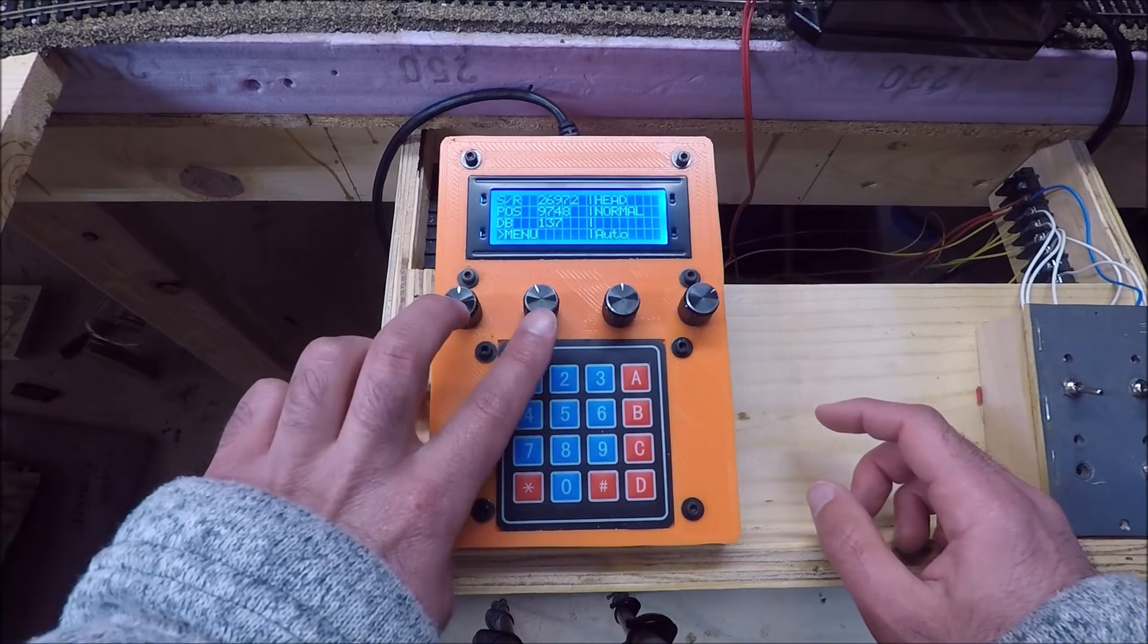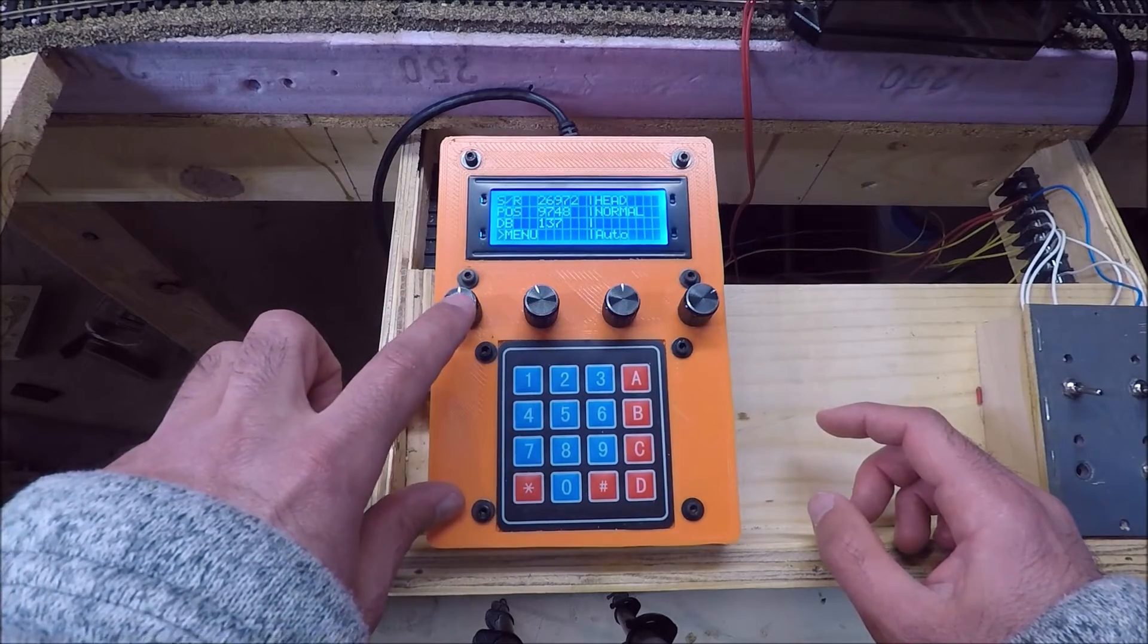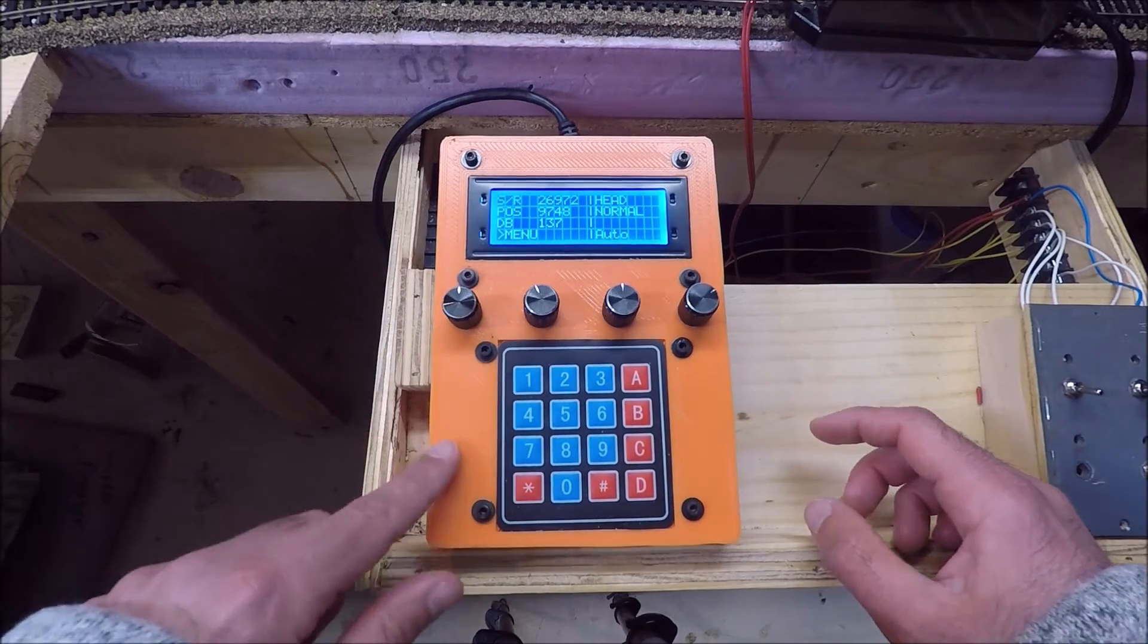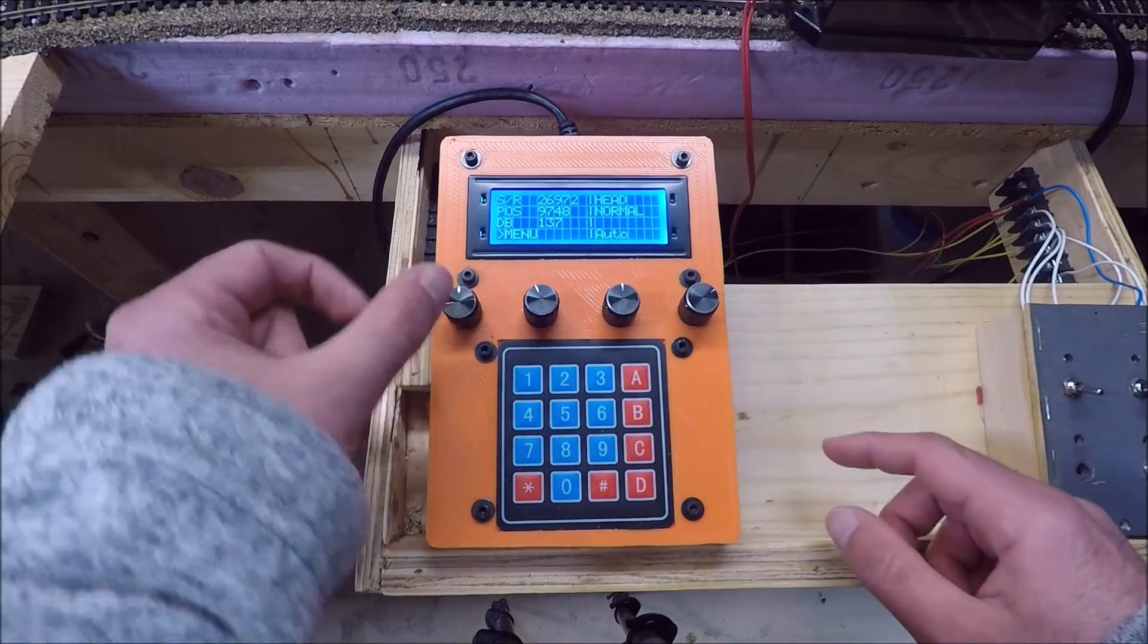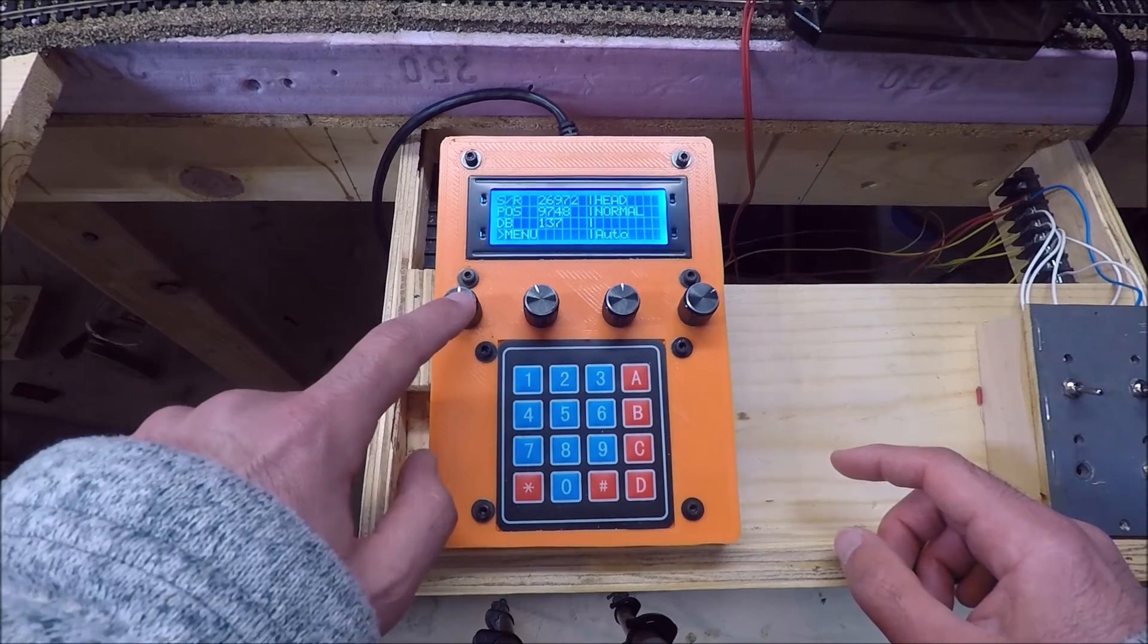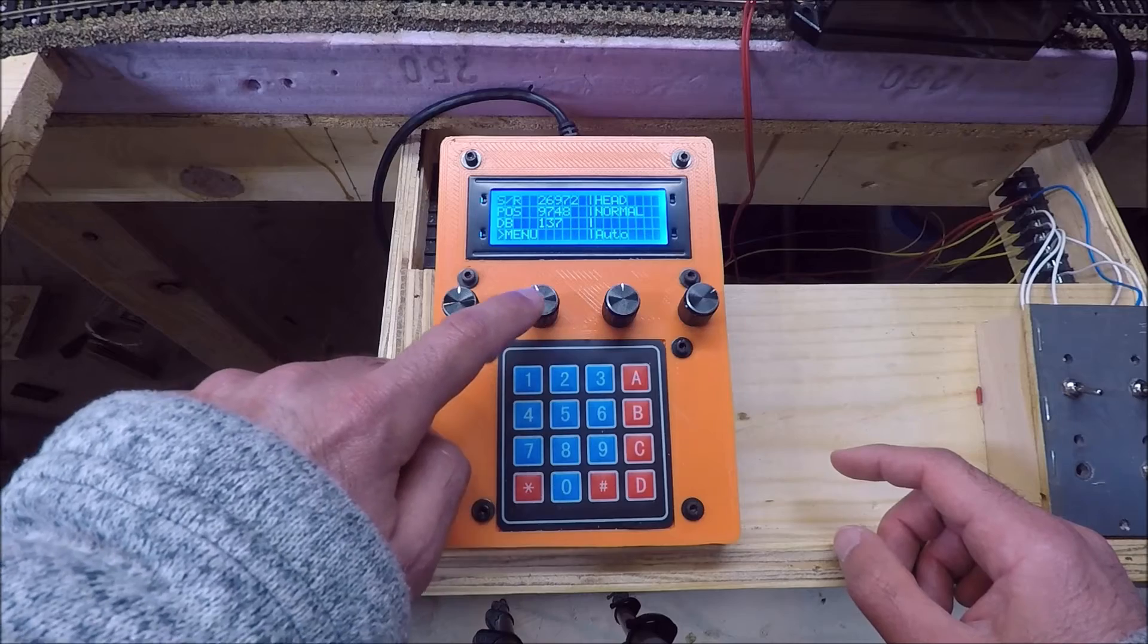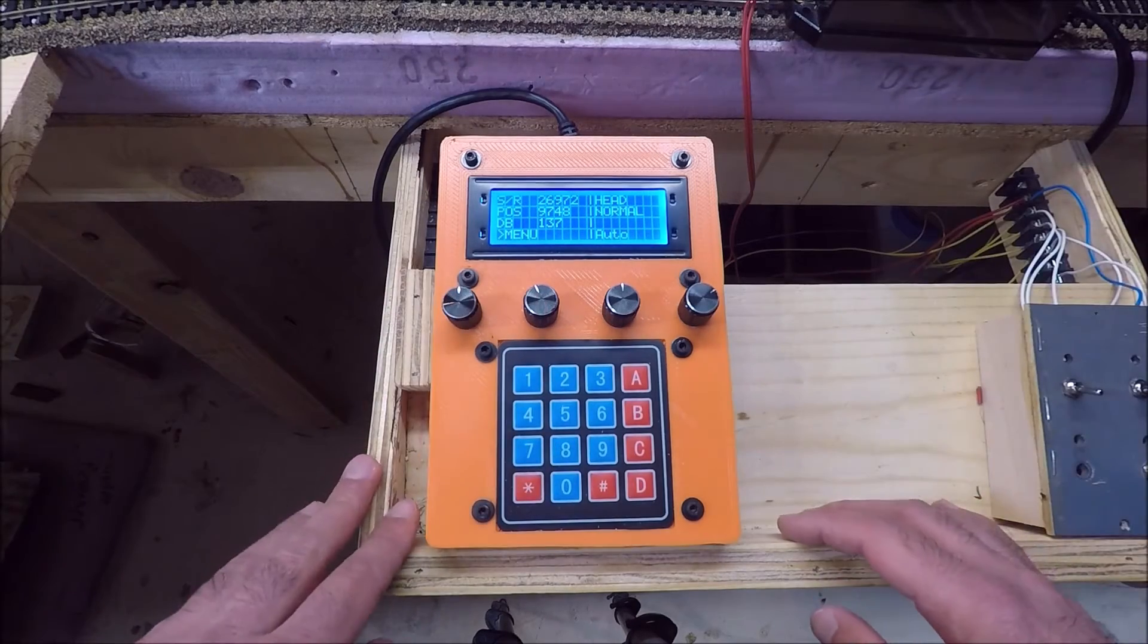These two potentiometers here are actually adjusting the jog speed and travel speed respectively. So if your jog speed is too slow you can adjust it real time with this potentiometer. Same thing with travel speed. You can adjust your travel speed real time with this potentiometer without having to go into the program.